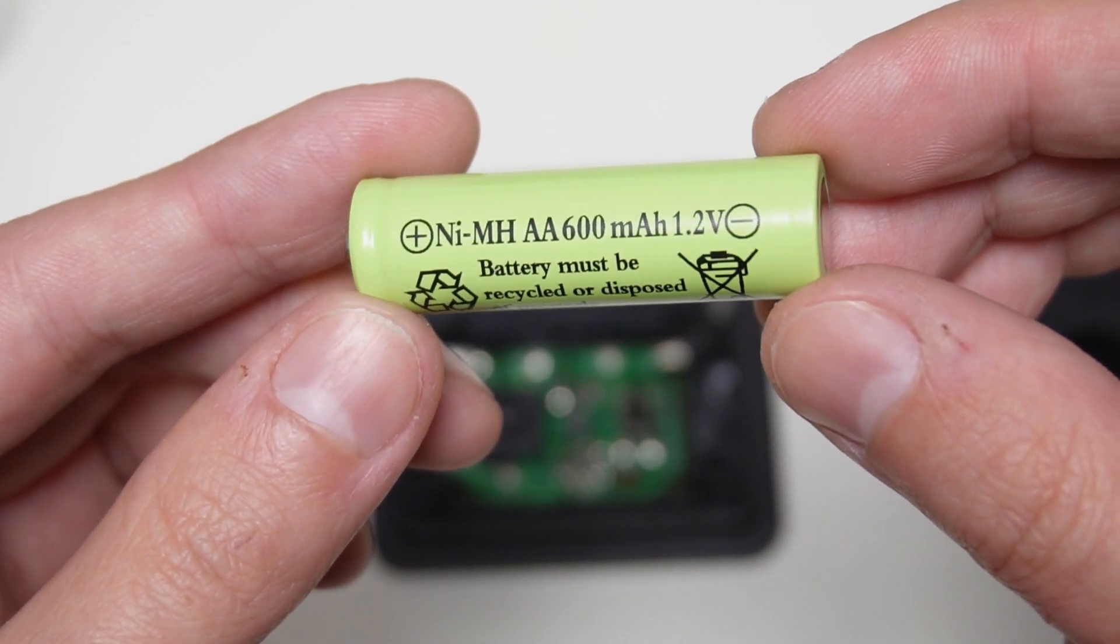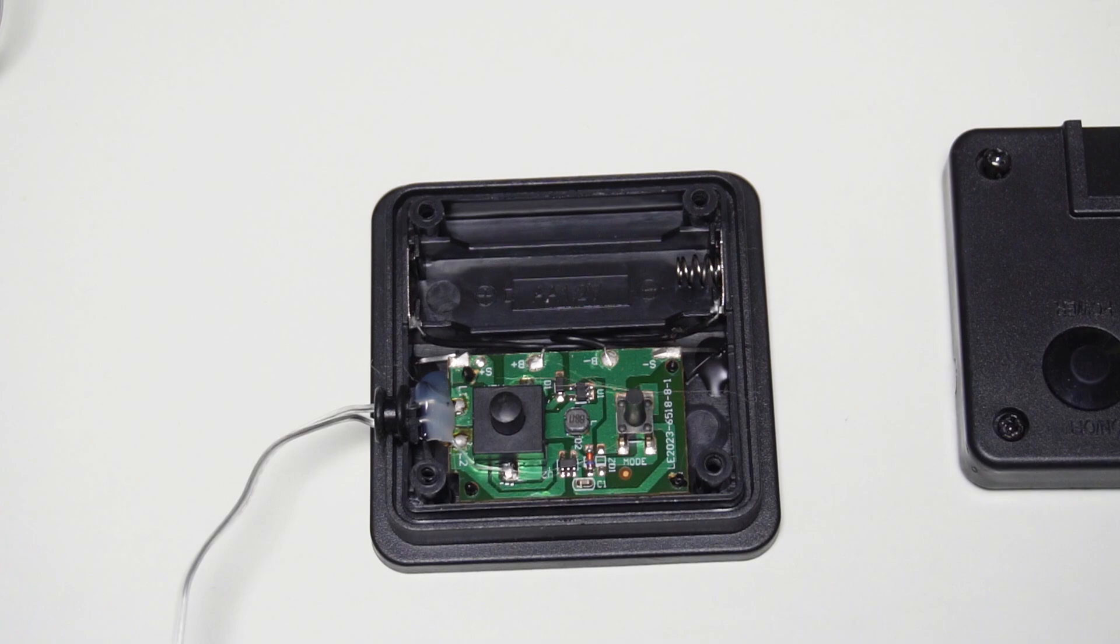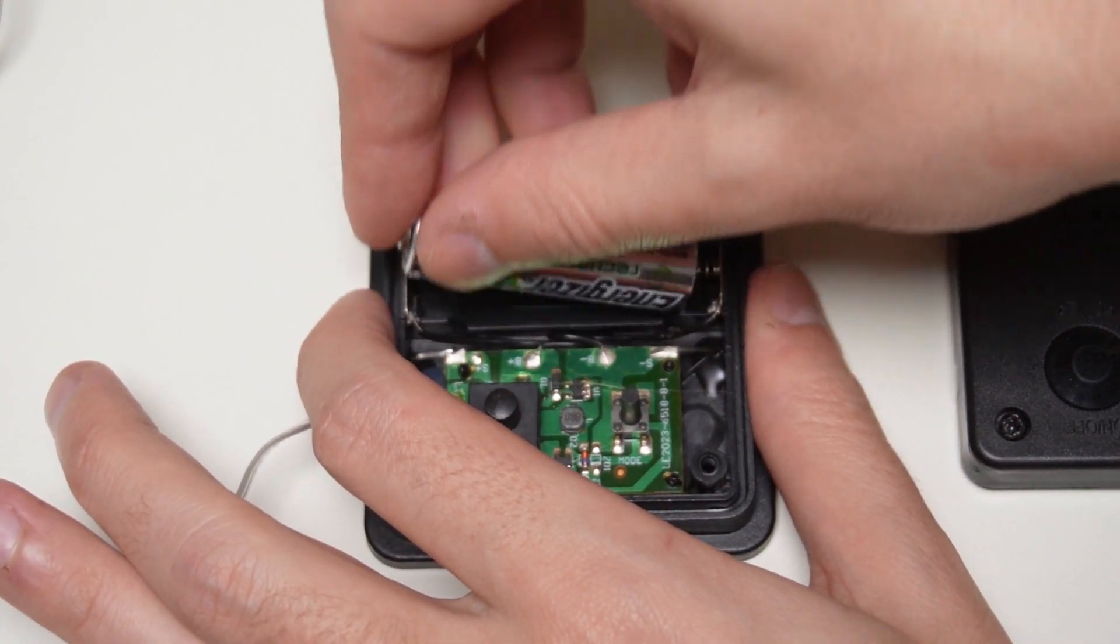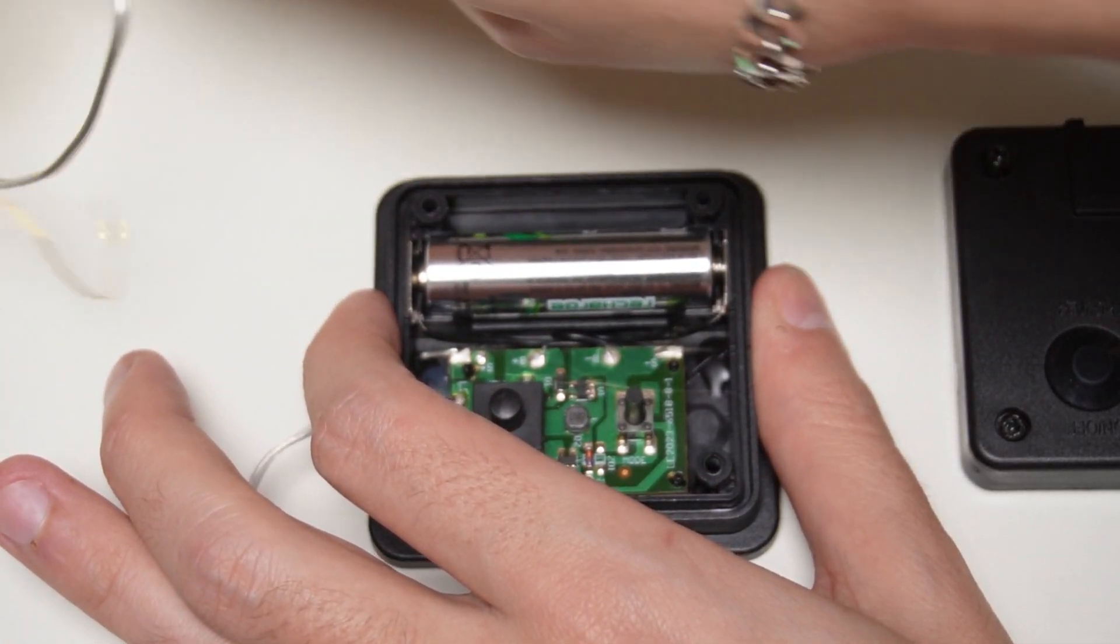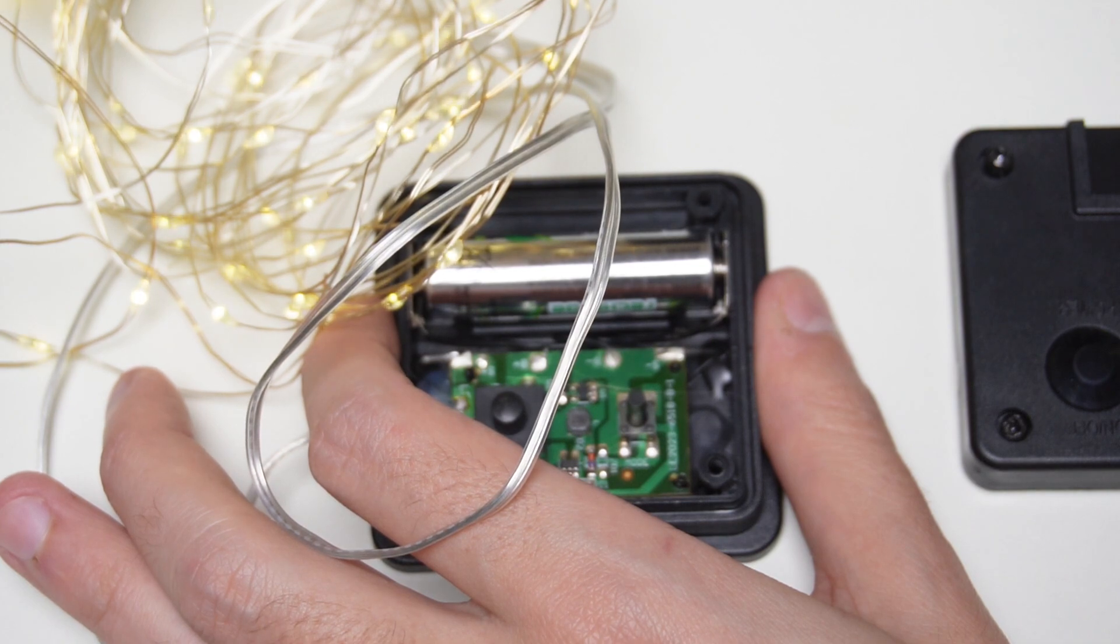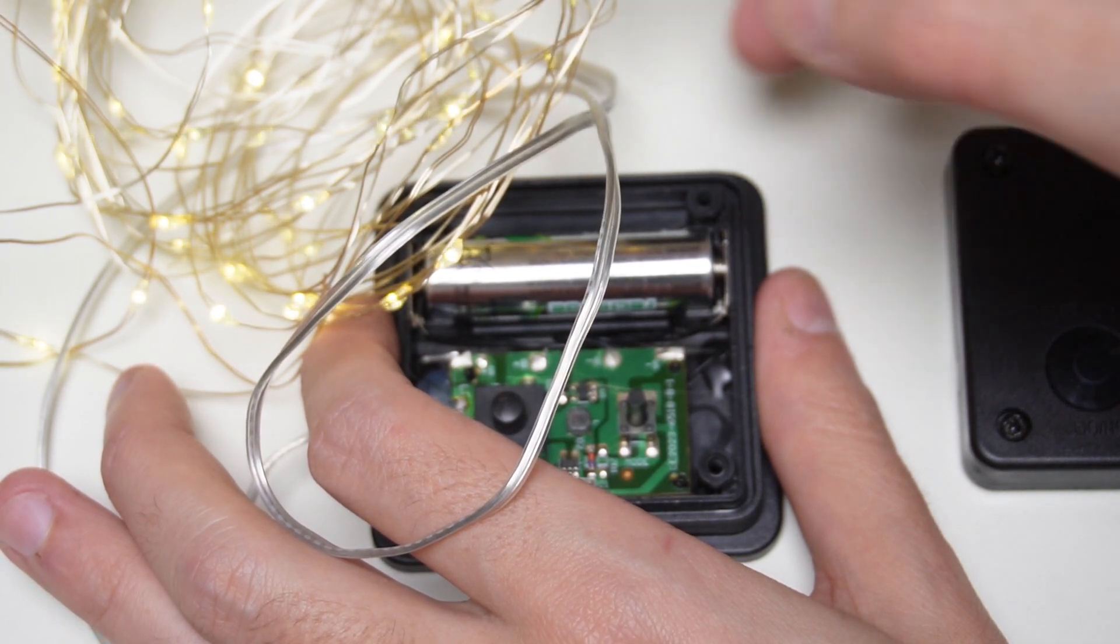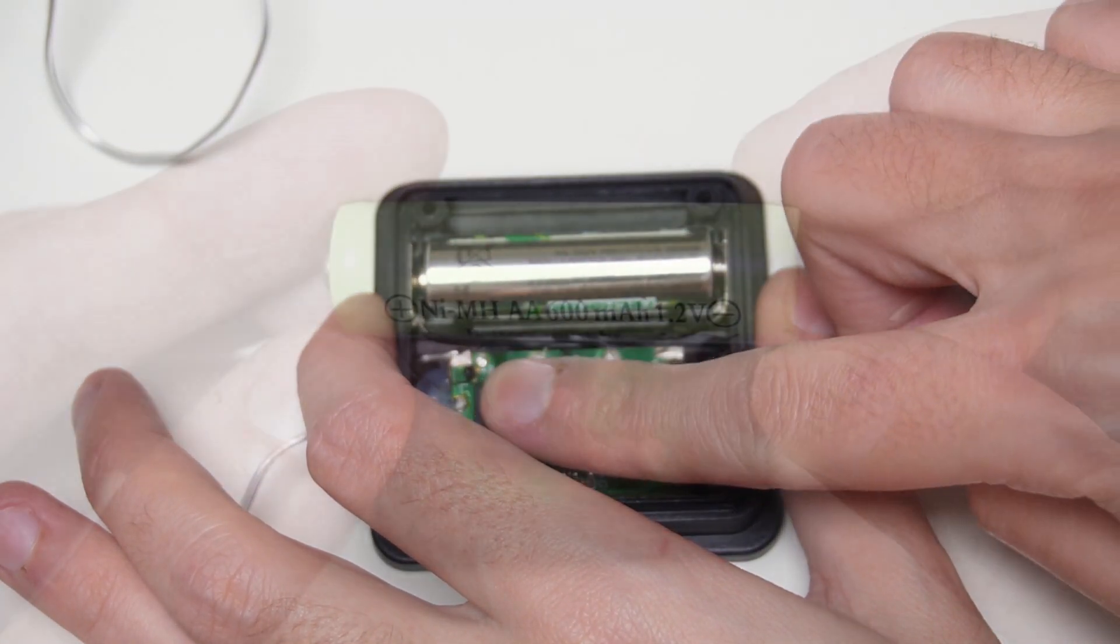Before buying a new battery you may check to see if the lights will work with another battery even if it's not a rechargeable one. If the lights are working you have to buy a new battery. Make sure it is a rechargeable AA battery.